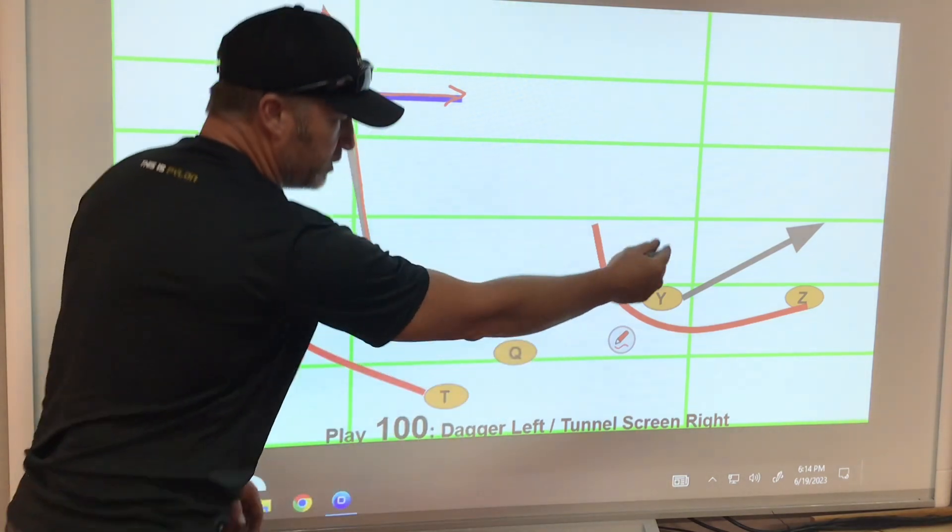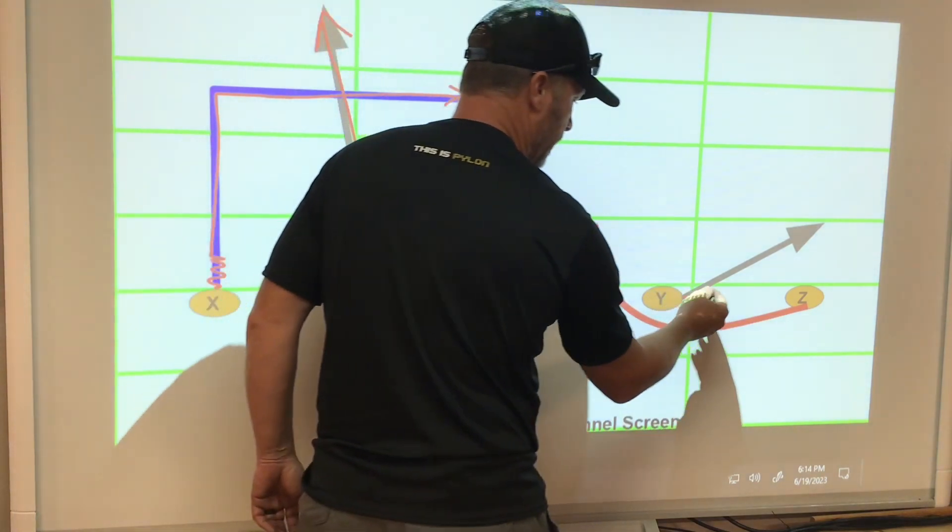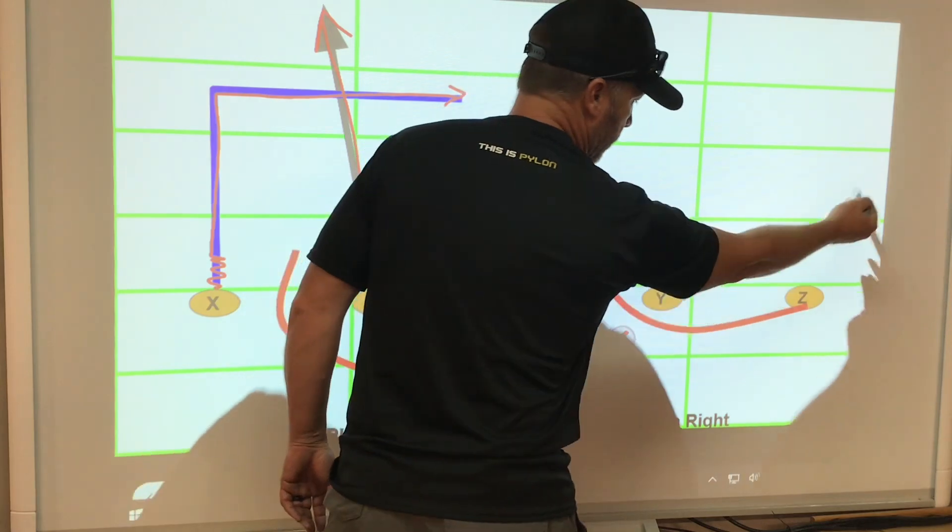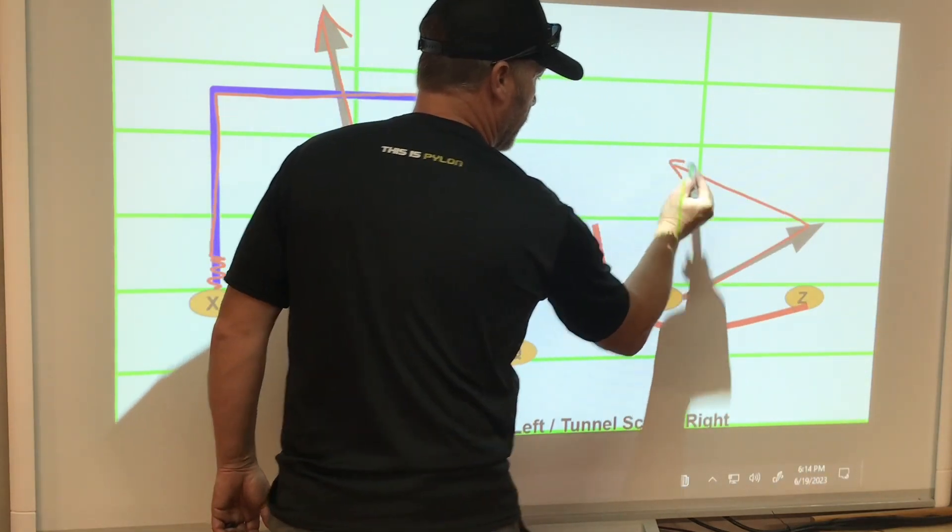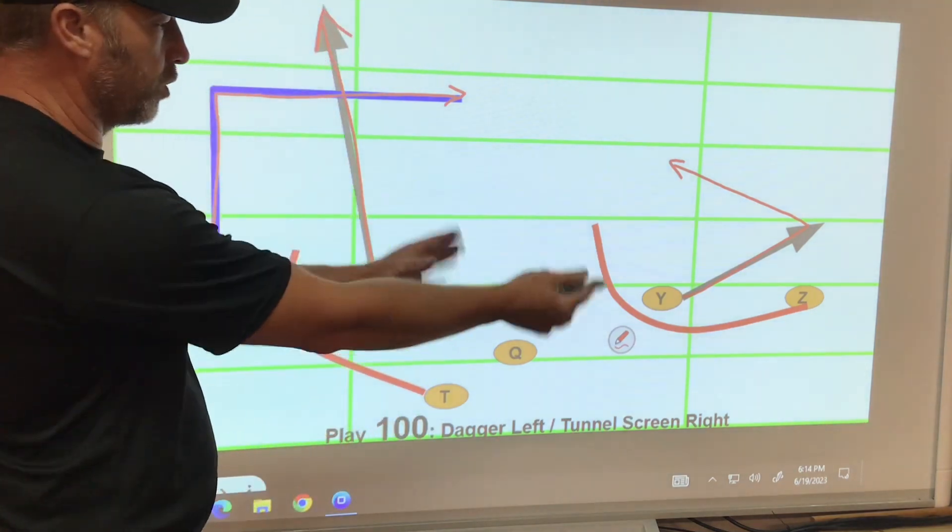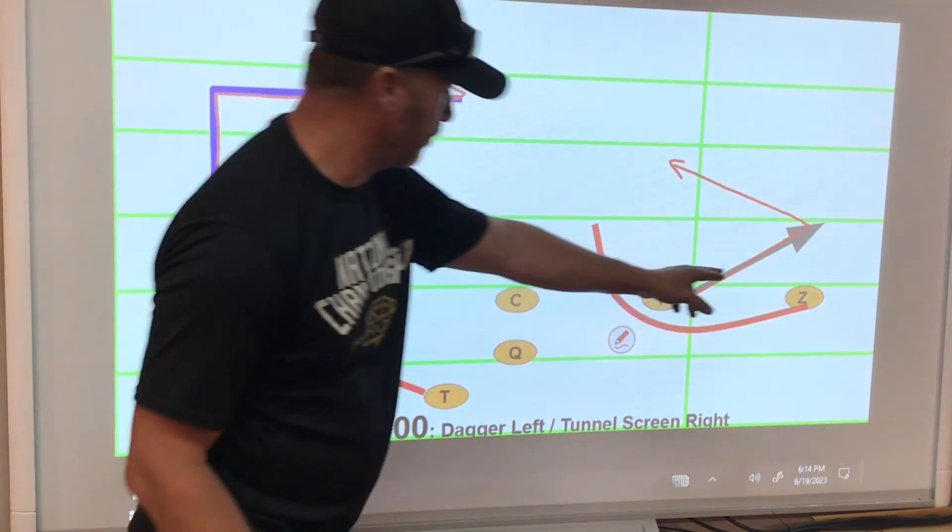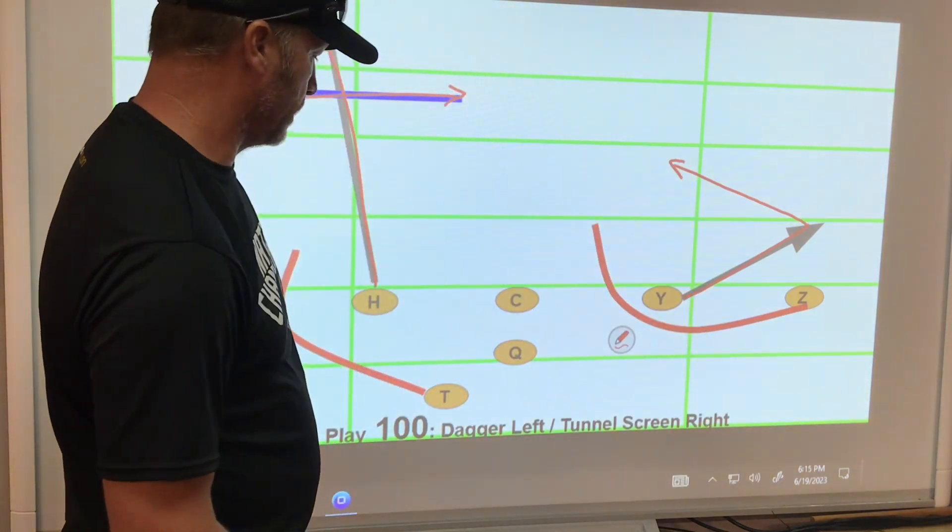On the tunnel screen side, I wouldn't change anything with the Z's route. One adjustment we'll make with the Y is, yes, you're drawing attention away and maybe even rubbing that defensive back, but then turn and come back and look for the ball because if the quarterback picks that side and we only need a few yards and for whatever reason the Z is covered up, you have a second option on that side.